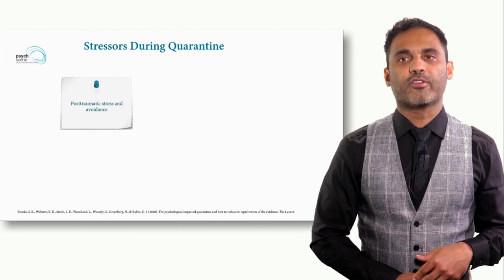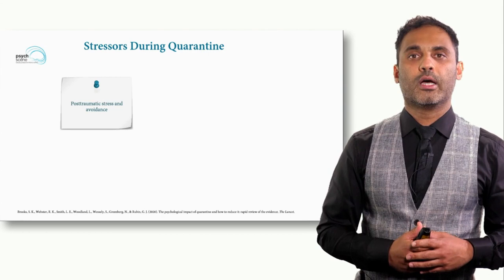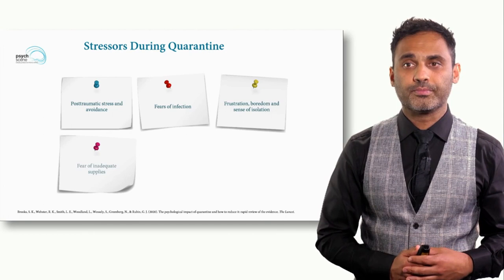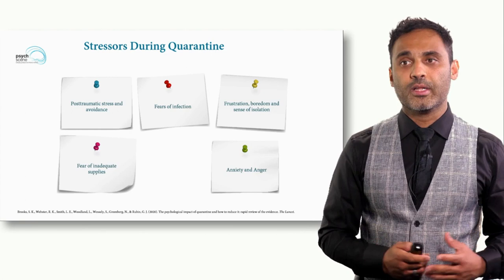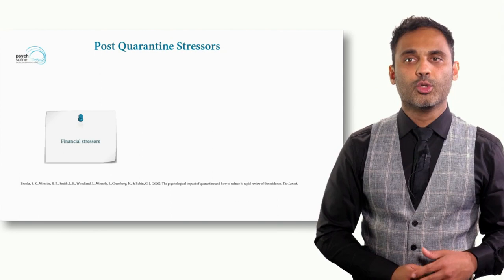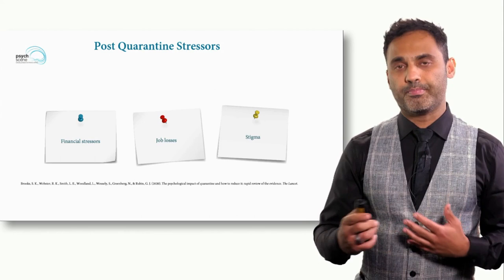Psychological factors from quarantine also need consideration. This pandemic has resulted in lockdowns with significant impacts on psychological health. These include post-traumatic stress and avoidance, fears of infection, frustration, boredom, sense of isolation, fear of inadequate supplies, anxiety and anger — and one must be vigilant about these persisting long-term. Post-quarantine stresses include financial stresses from prolonged lockdown causing business or employment losses, and stigma associated with having had the infection.